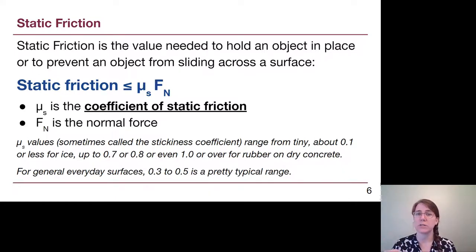It is possible for materials to have a coefficient above 1, and that would be a situation kind of like if something is glued. It is harder to push it across where it's glued to than to just kind of pull it away from that situation. Now the reason why it's less than or equal to is because static friction only does what it has to to hold an object in place.